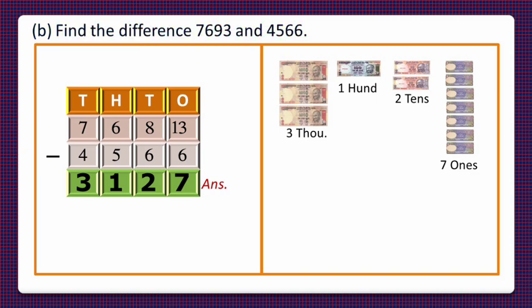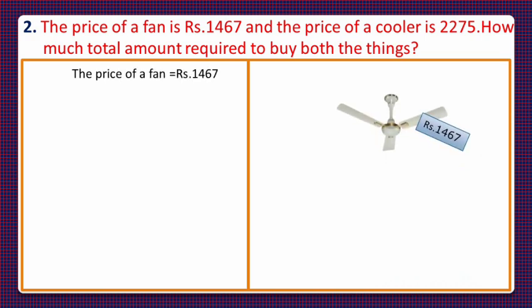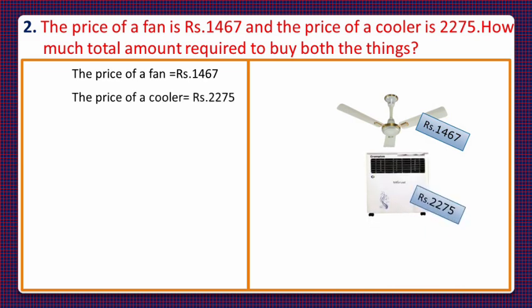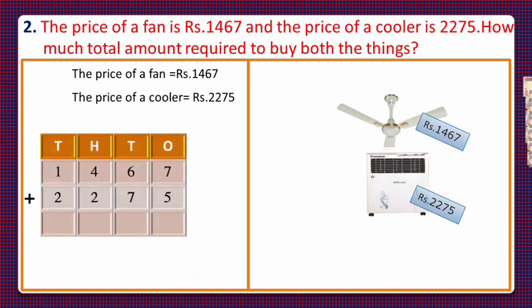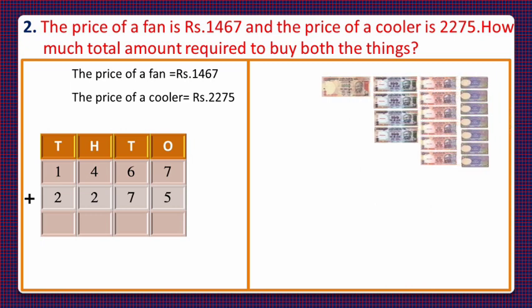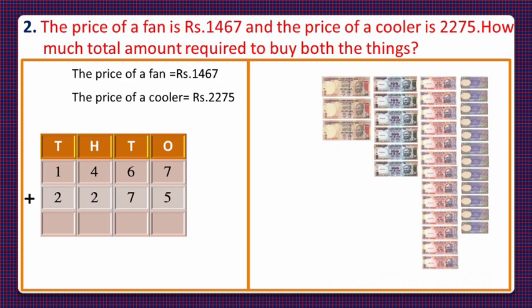Now let's move to question number 2. The price of a fan is rupees 1467 and the price of a cooler is 2275. How much total amount is required to buy both things? To calculate the total amount, we will add the price of the fan and cooler. For adding them, we'll take the currency notes: 1467 for the fan's price and 2275 for the cooler's price.